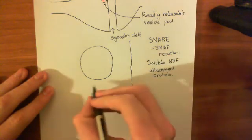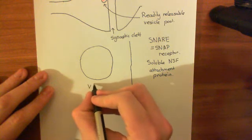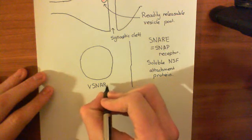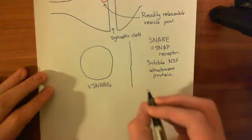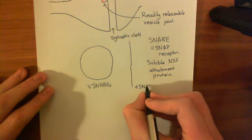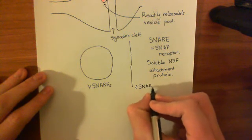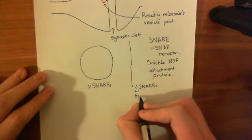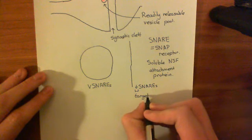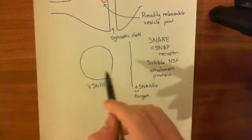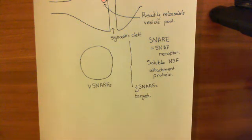SNARE proteins can be divided into two types: V-SNAREs, which are those associated with the vesicle, and T-SNAREs, which are those associated with the target membrane. The T-SNAREs are on the target membrane — in this case, the plasma membrane. It's the membrane that you are hoping to fuse your vesicle with, so it's the target for the vesicle.